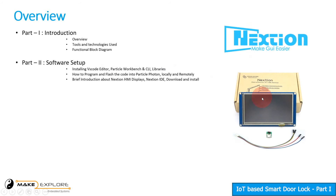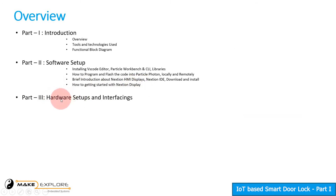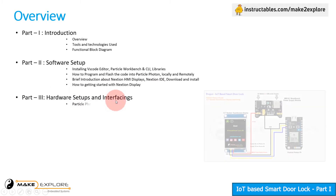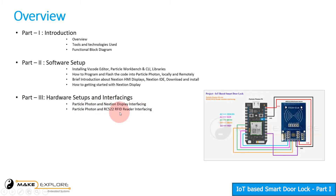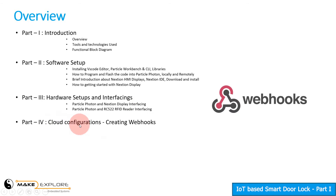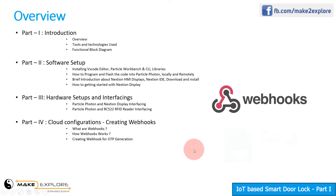Then we will see a brief introduction about NextGen HMI Displays, NextGen IDE, downloading and installation. After that we will learn how to get started with NextGen Display. In the third part, we will take a look at hardware setup and interfacings, which will cover Particle Photon to NextGen Display interfacing and Particle Photon to RC522 RFID Reader interfacing, their schematics and basic coding. In the fourth part, we will see about webhooks configuration — what are webhooks, how they work — and creating webhooks for OTP generation and Google Sheet entry.